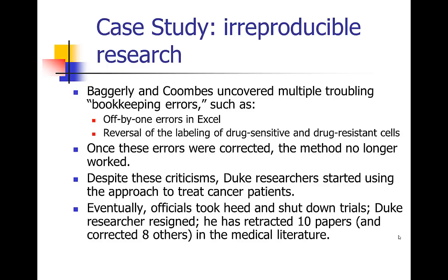Baggerly and Coombs went on to write a letter to the editor of Nature Medicine, where the first publication had been published by the Duke authors. That letter was published, but then that was kind of it. The researchers at Duke kept publishing more on this method. Baggerly and Coombs now were invested in continuing to sleuth these papers, and they found errors in a number of other papers. When they corrected these errors, the method just no longer worked.